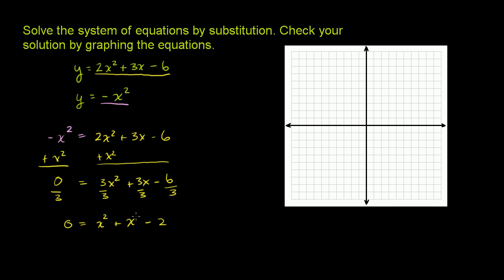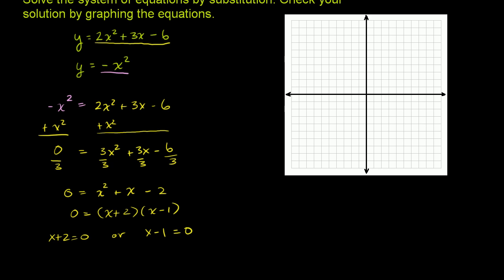We could use the quadratic formula or complete the square, but this is actually very factorable. 0 is equal to — two numbers: 2 and negative 1. When you multiply them you get negative 2, when you add them you get positive 1. So this factors as x plus 2 times x minus 1. That tells us x plus 2 equals 0, or x minus 1 equals 0. So x is equal to negative 2, or x is equal to 1.